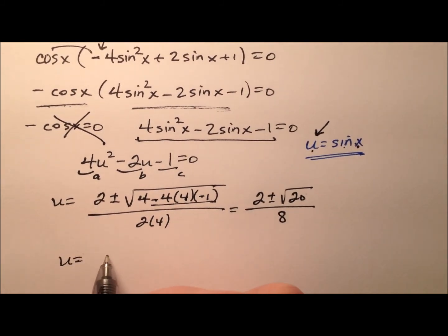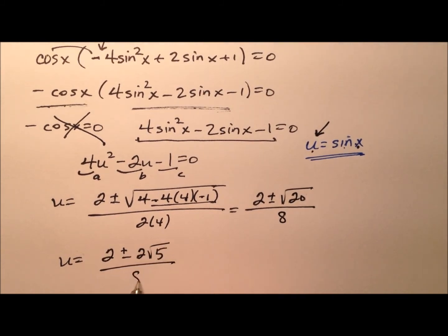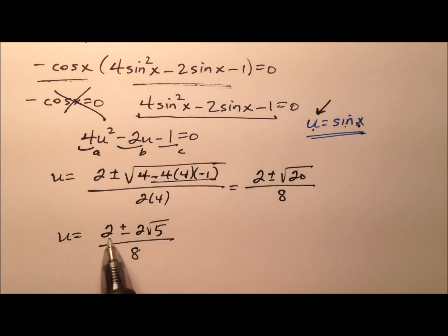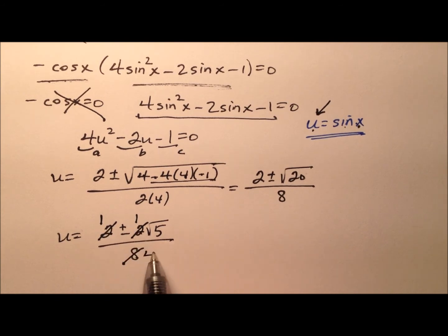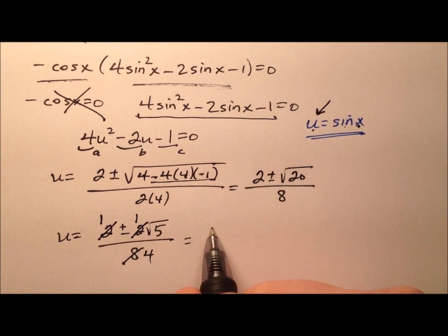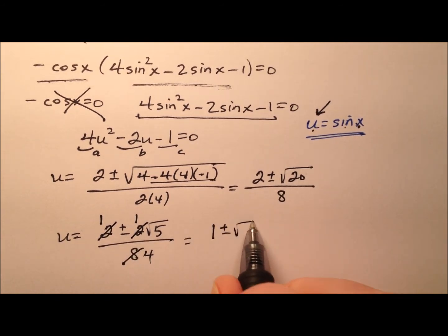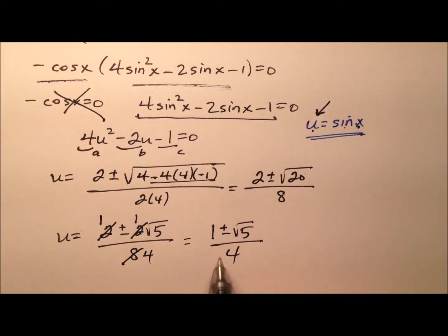And the square root of 20 can actually simplify nicely to 2 times the square root of 5. And then I have a 2, a 2, and an 8, so I can factor and cancel a 2 out of everything, which will leave me 1, 1, and 4. So it looks like 1 plus or minus the square root of 5, all over 4.